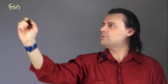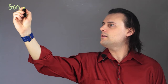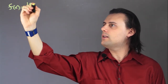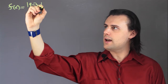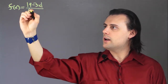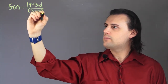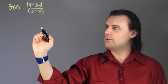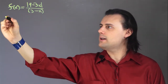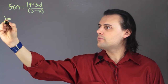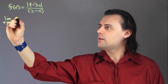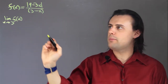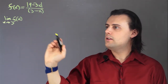If we consider a function that has an absolute value in it, say f of x is equal to the absolute value of 9 minus 3x divided by 3 minus x, and we want to take the limit of this function as x approaches 3, then we have to consider the definition of the absolute value function.